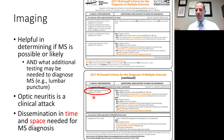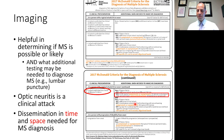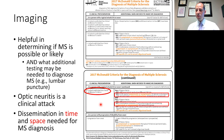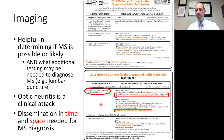If dissemination in time is not present but the patient otherwise meets dissemination in space criteria, that's where a lumbar puncture may be helpful to look for oligoclonal bands. A lumbar puncture may not be helpful in all cases of optic neuritis, but in cases where it would make the diagnosis or if you're ruling out some other atypical cause, then it may be necessary. I do not routinely advocate for lumbar punctures in most of my patients with typical optic neuritis.